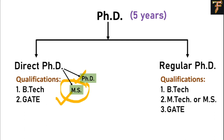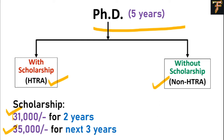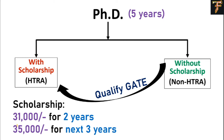PhD at IIT Madras is also divided into HTRA and non-HTRA, similar to MS. Eligibility for the scholarship depends on whether you are GATE qualified or not. For PhD scholarship, the initial two years you will get around 31,000, and after the second year it converts to 35,000 for the next three years. Just like MS, you can convert your non-HTRA to HTRA after qualifying GATE — join IIT Madras, give the exam the next year, qualify it, and from the day you submit your documents you are eligible for the scholarship.